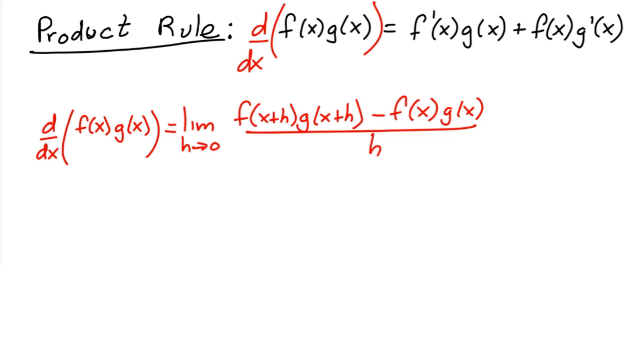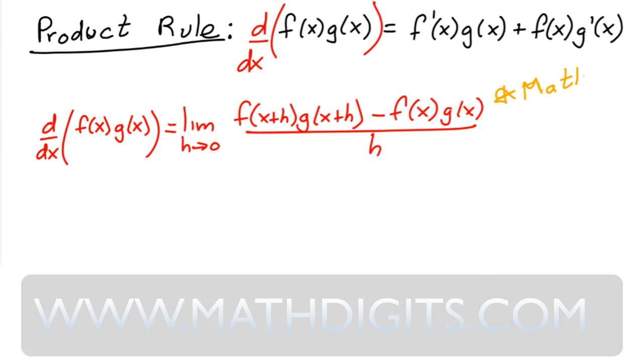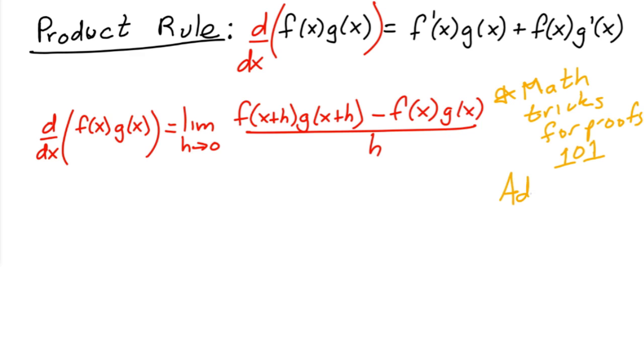This is math tricks 101, math tricks for proofs 101. This is a trick used commonly to prove various things. It's a good thing to have. So basically what it boils down to is you're going to add zero.